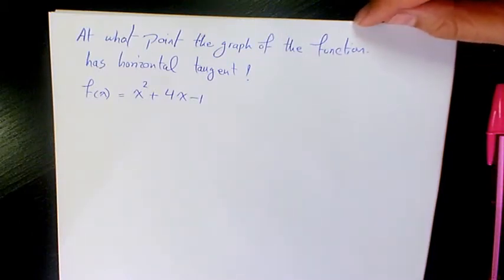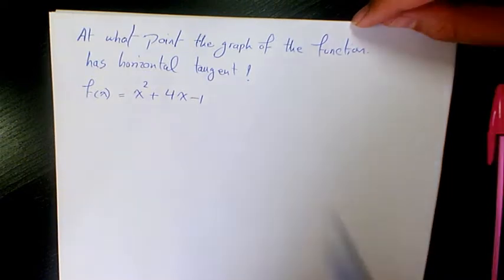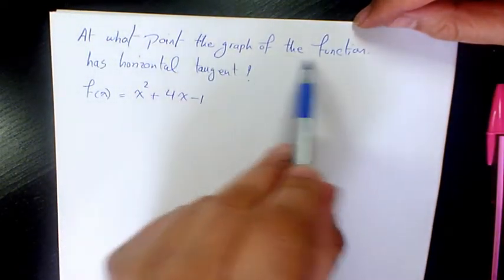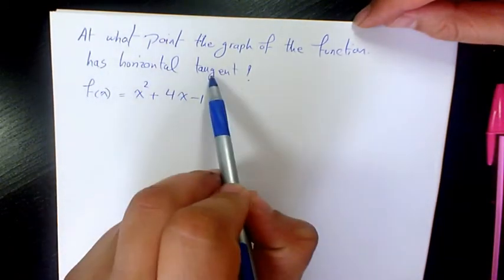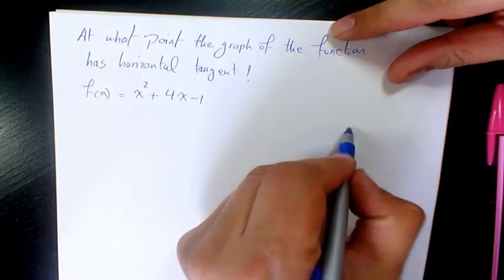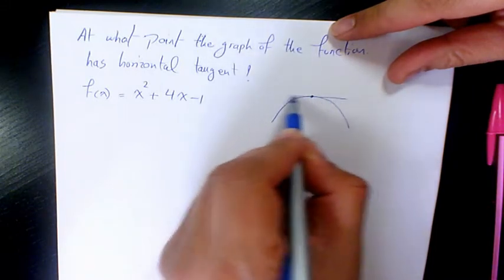What's up guys, this is Massey, welcome to another video. In this video I want to talk about finding the tangent to a curve and find out the slope of it. It says at what point does the graph of the function have a horizontal tangent — what does that mean? A horizontal tangent is going to be something like that.